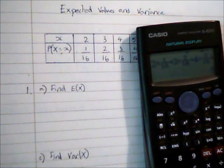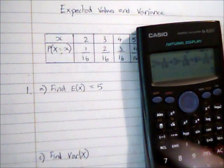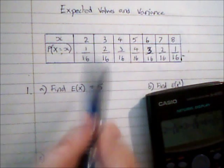I've got there a value of 5, so that is my expected value. And for this particular one, because it's a symmetrical distribution,